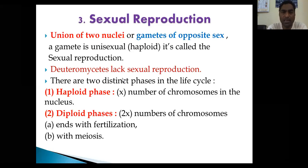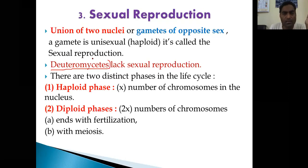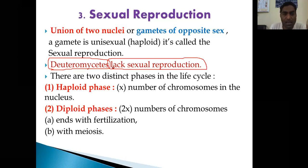Whatever gametes are going to be fused, they are definitely haploid. After fertilization or fusion, the zygote is formed. Now, the class Deuteromycetes lacks sexual reproduction. There are four different types of classes: Phycomycetes, Ascomycetes, Basidiomycetes, and Deuteromycetes. Deuteromycetes is the last class in the classification as per G.M. Smith. They lack sexual reproduction — keep that in mind, as questions may be asked on this — because gametes or reproductive structures are not formed.